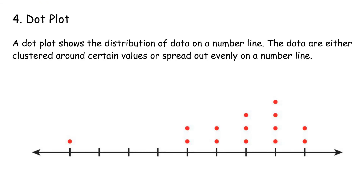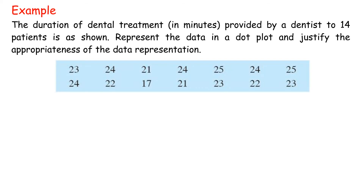Type 4 — Dot Plot: A dot plot shows the distribution of data on a number line. Data are either clustered around certain values or spread out evenly. It helps visualize data patterns, draw inferences, and make decisions, and can also detect unusual observations — that is, extreme values. Example: the duration of dental treatment, in minutes, provided by a dentist to 14 patients is represented by a dot plot.